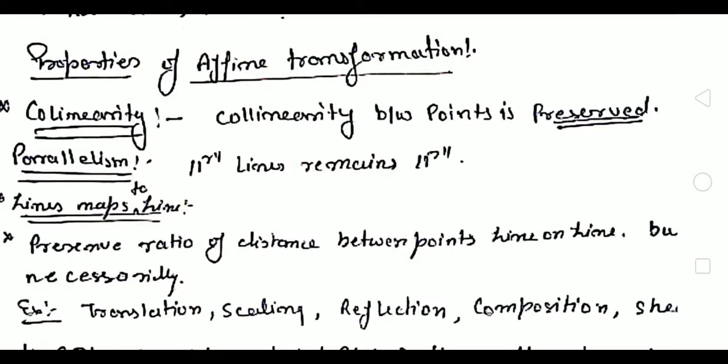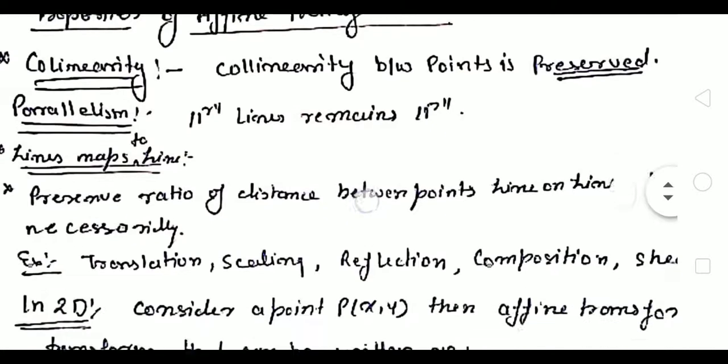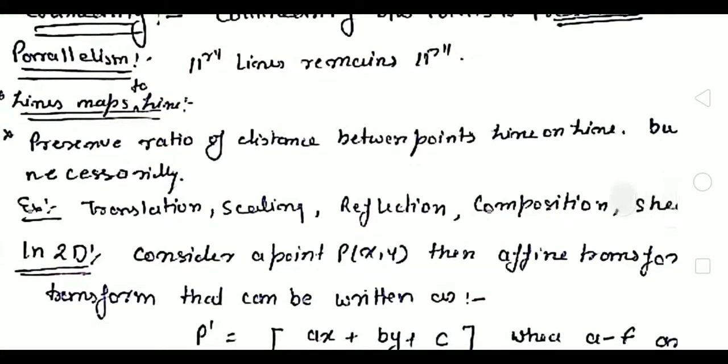Another property is parallelism — parallel lines remain parallel. If one rectangle is here and you are using some transformation on that rectangle and a new object with new coordinates is coming, whatever parallel lines are in the old object, the new object has the same. Parallel lines remain parallel.